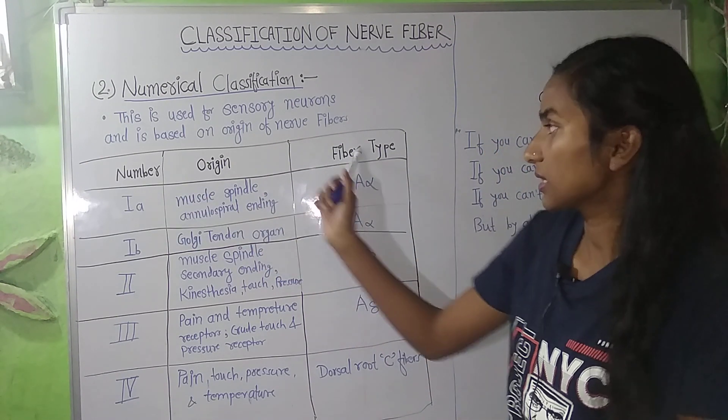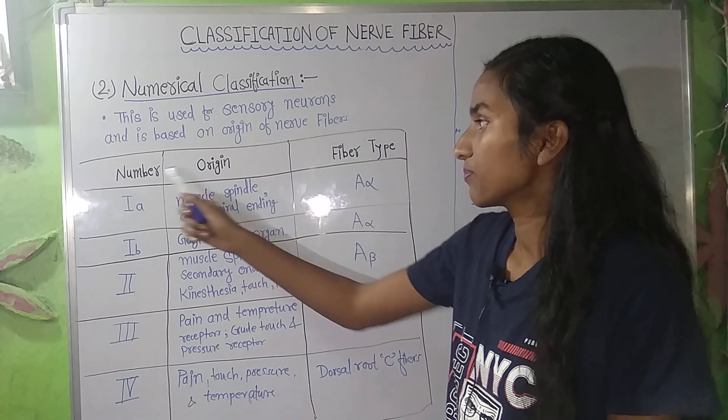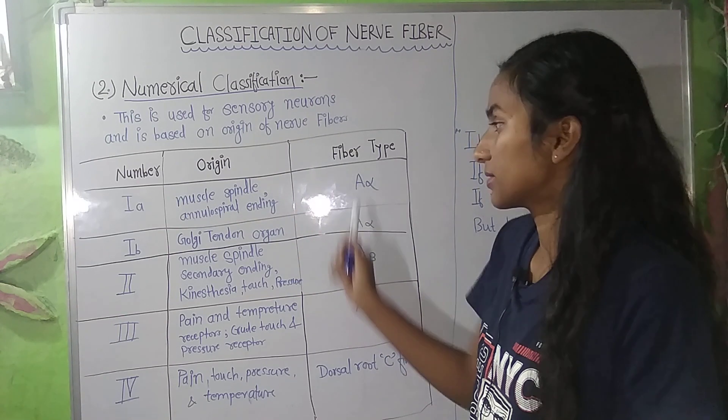In this table we will write three columns: Number, Origin, and Fiber Type.